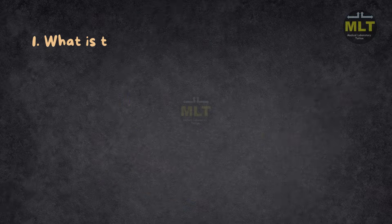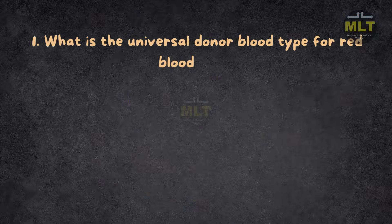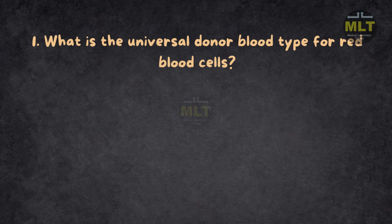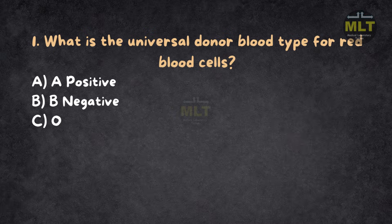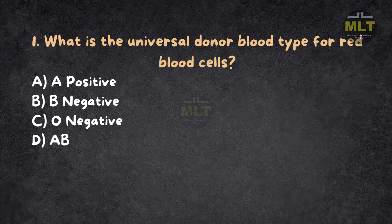Question 1: What is the universal donor blood type for red blood cells? Option A: A positive. Option B: B negative. Option C: O negative. Option D: AB positive.